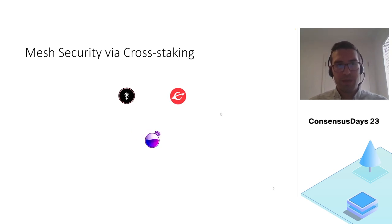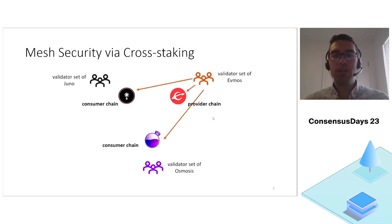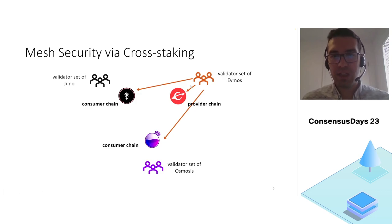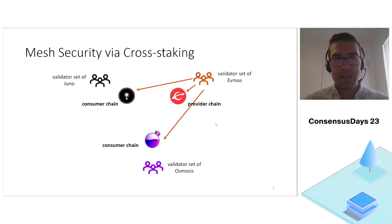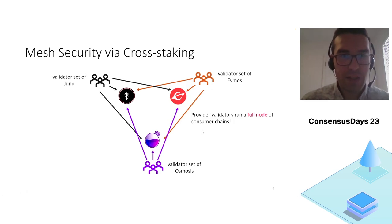One way that was proposed to implement mesh security was cross staking. In cross staking, the validator sets of each proof of stake blockchain not only validate their own chain but also validate the consumer chains. In this example the Cosmos chain is the provider chain and its validator set is validating both the Cosmos chain and the consumer chains. In the mesh security architecture where each chain can be both a provider and a consumer, every validator set ends up validating every other chain.